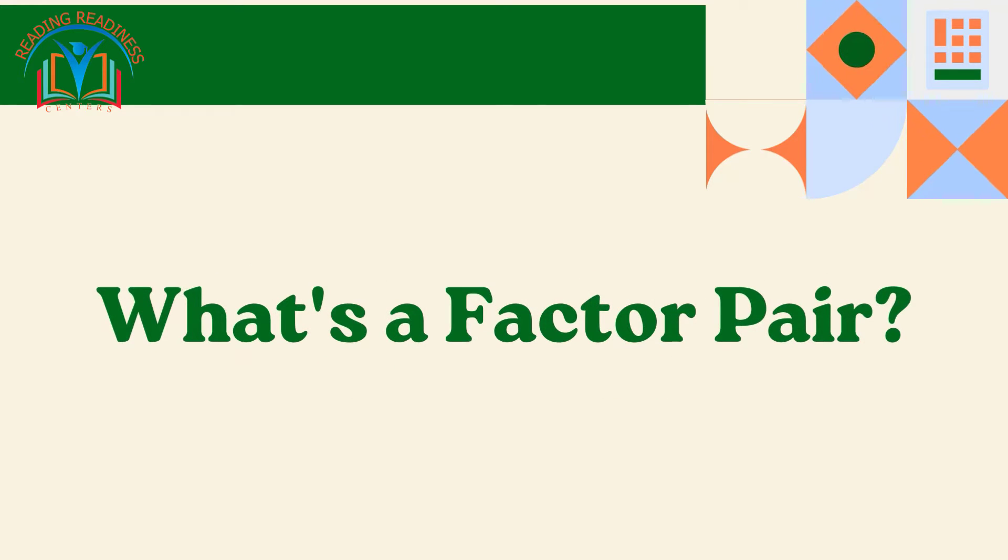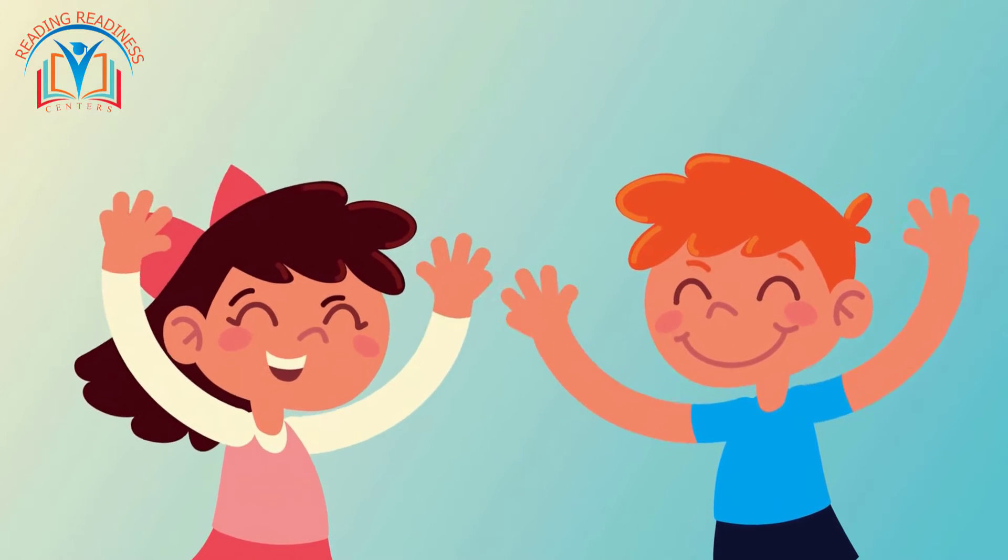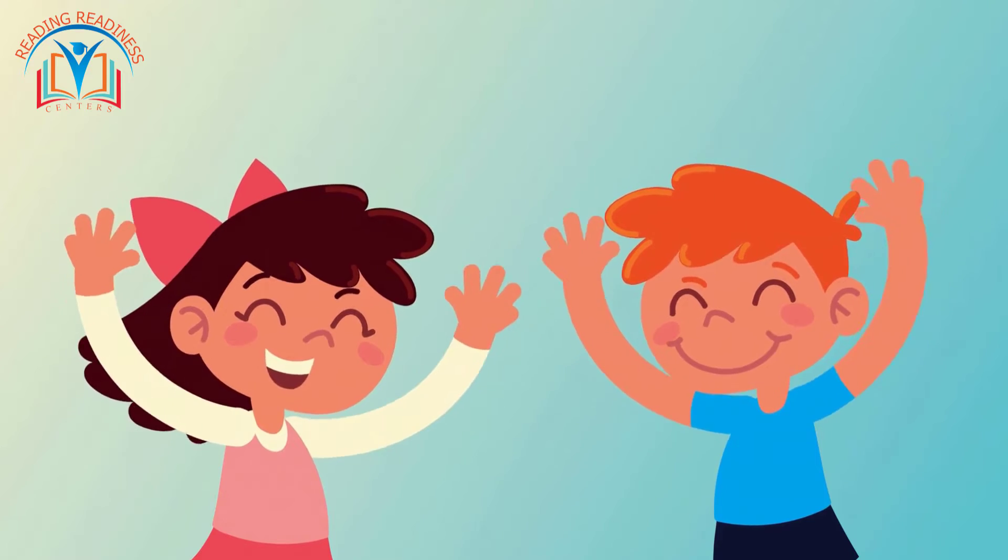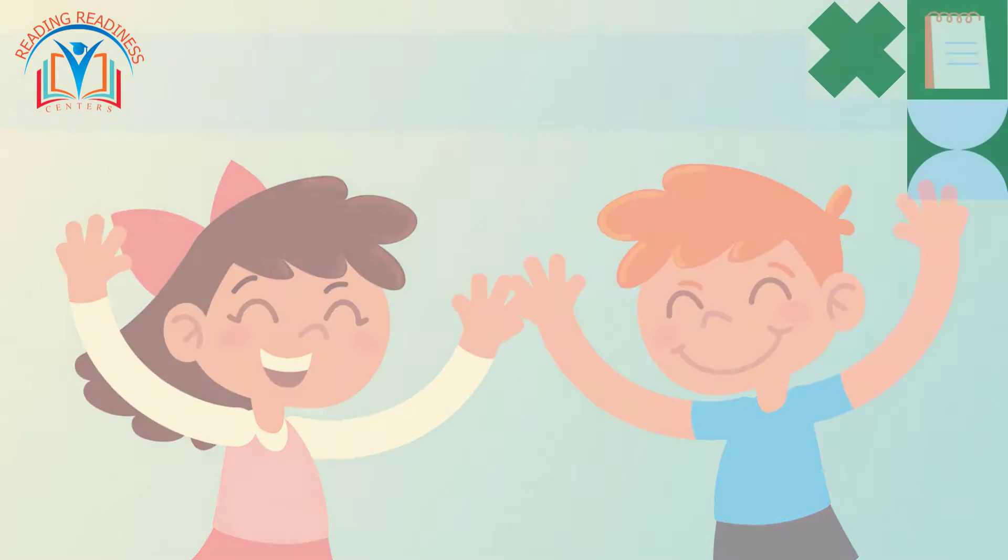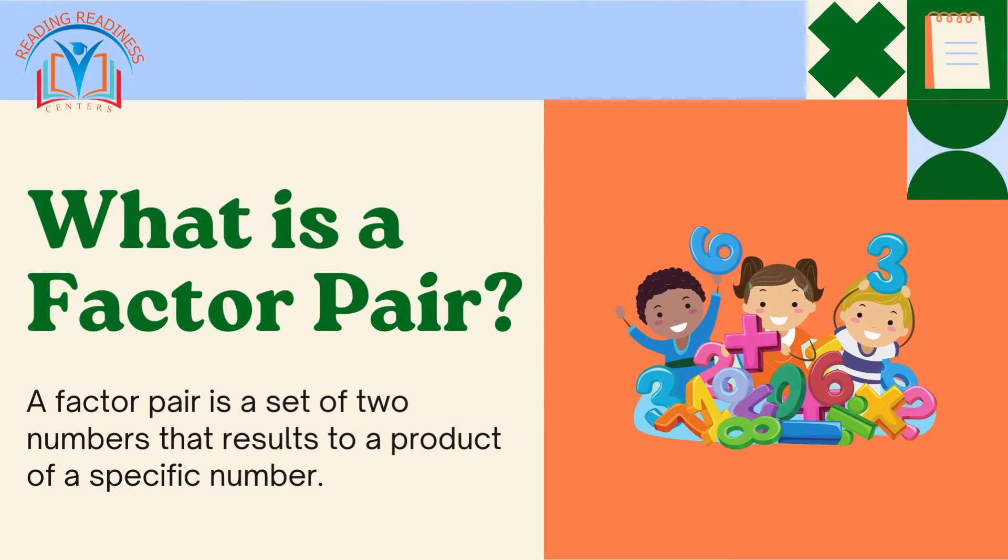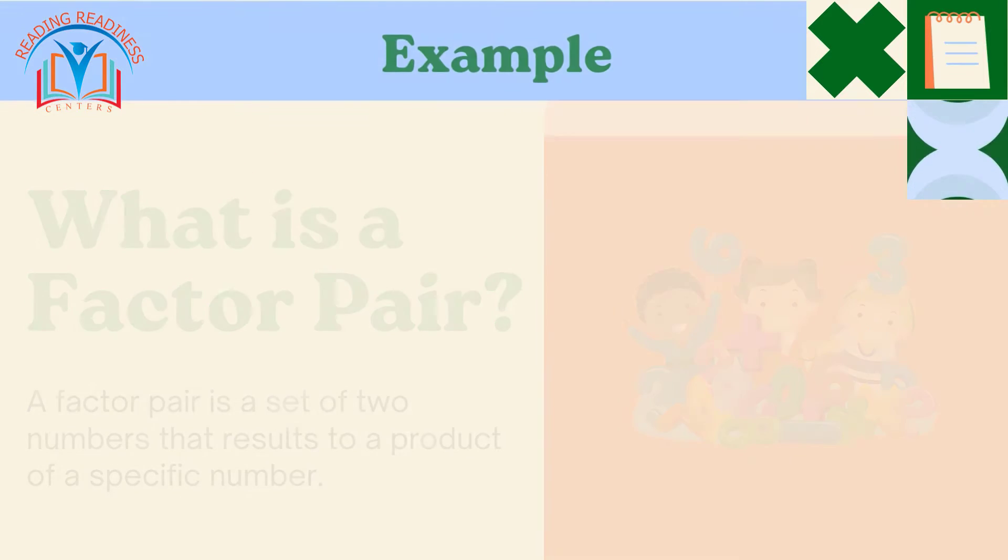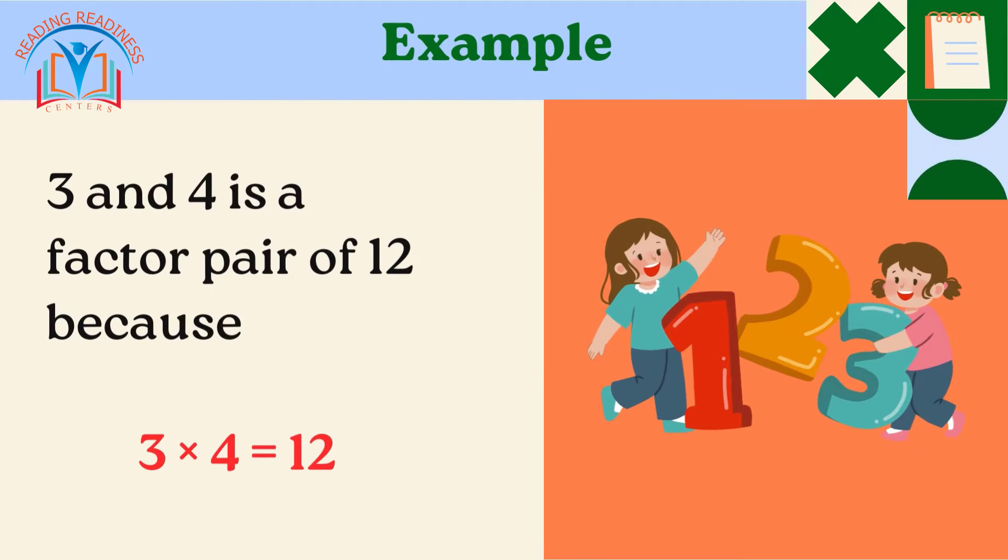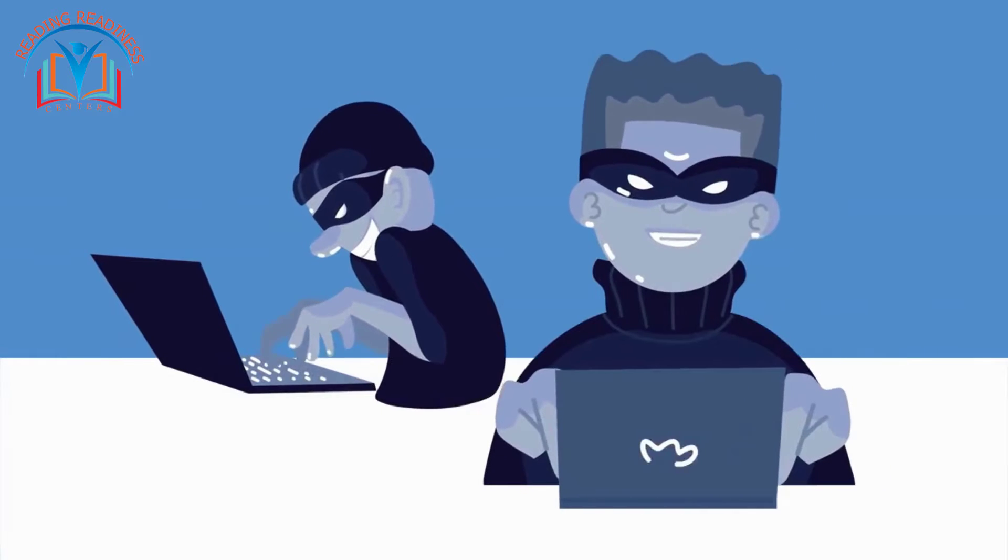What's a factor pair? But factors don't always work alone. They often come in pairs like best friends. A factor pair is a set of two numbers that results to a product of a specific number. For example, 3 and 4 are a factor pair of 12 because 3 times 4 is equal to 12. Think of them as partners in crime solving.